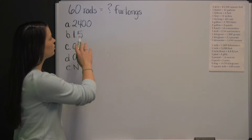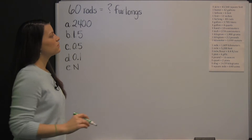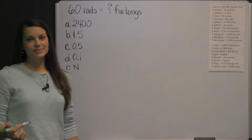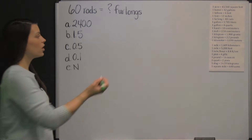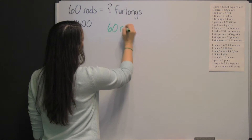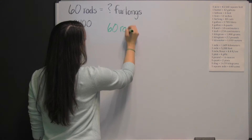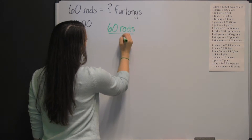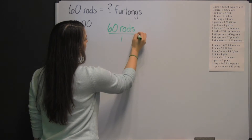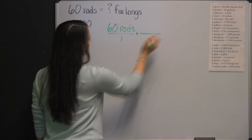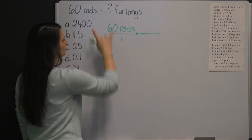We're converting from 60 rods to furlongs. Start with what you have originally, which is the 60 rods. Go ahead and put that over one, and we're going to multiply it times a conversion factor.